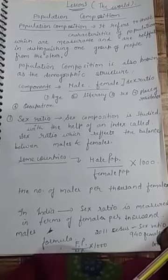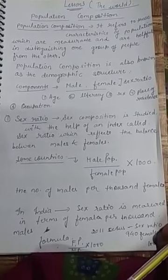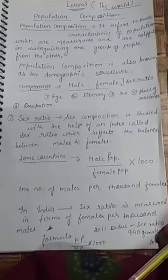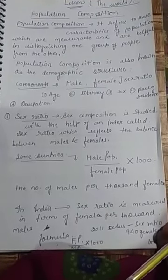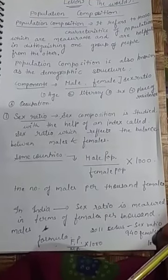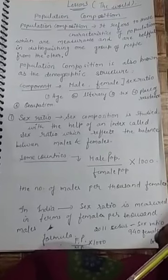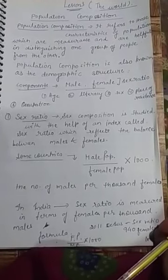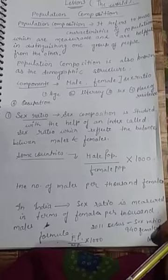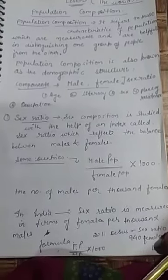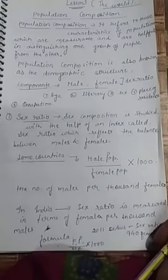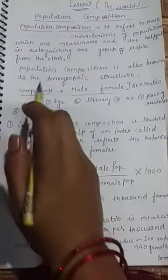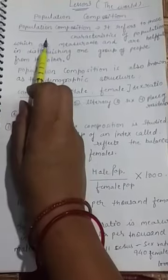Before discussing this chapter, I just want to recall some terms which you have studied in the first and second chapter. In our previous chapter, we had discussed about the population part. I hope that you understand the definition of population, distribution, and density. Now in this chapter, we are starting with the world population composition.